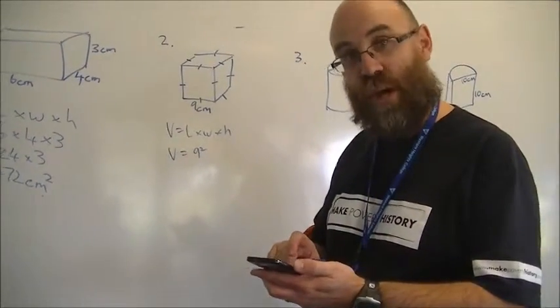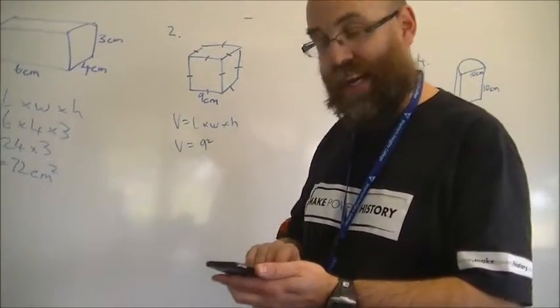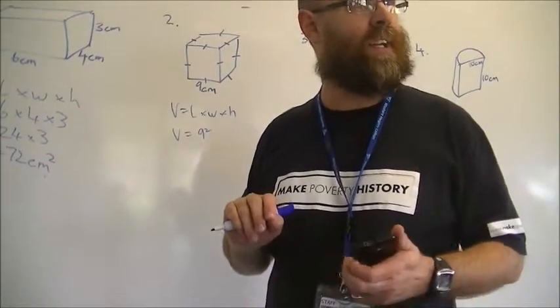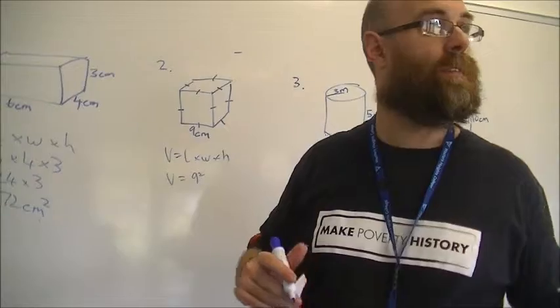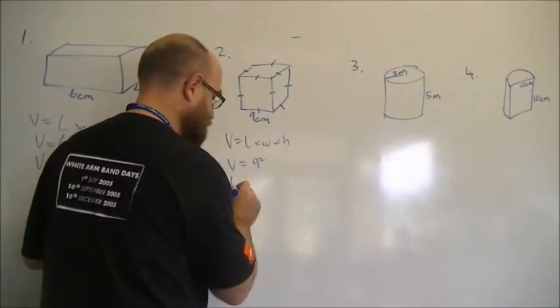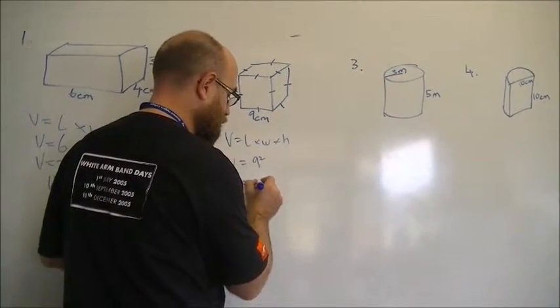Now, I know that 9 times 9 is 81, but off the top of my head I don't know what 81 times 9 is. Can anyone help me? So, the answer is 700, did I say square?